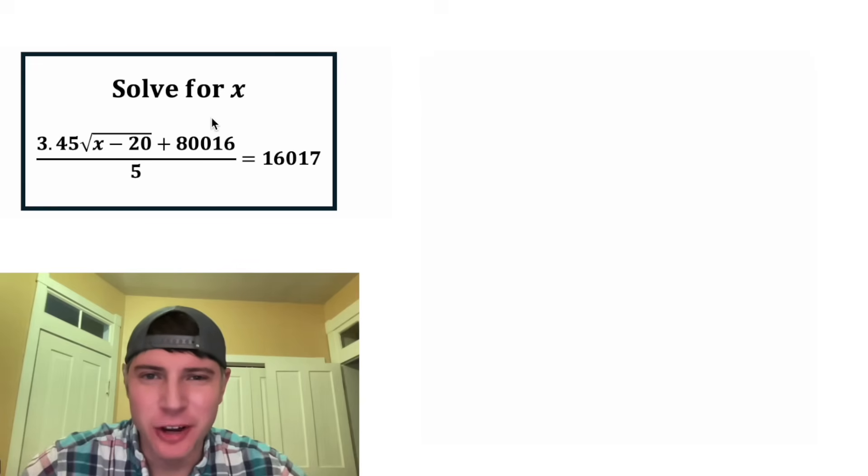Hey guys, this looks like a fun one. It says solve for x. It's 3.45 times the square root of x minus 20 plus 80,016 whole thing divided by five equals 16,017.